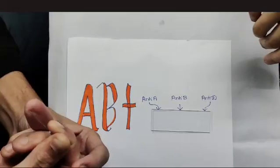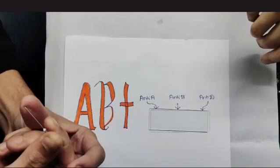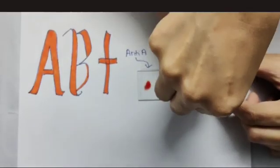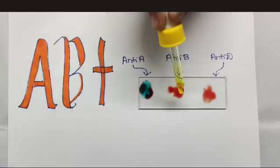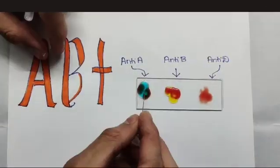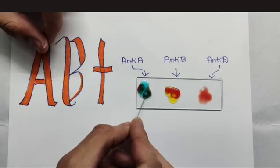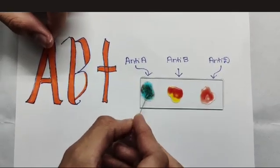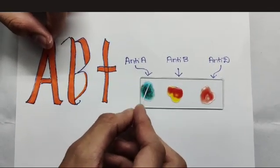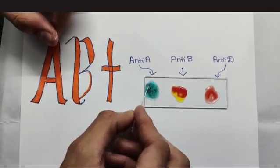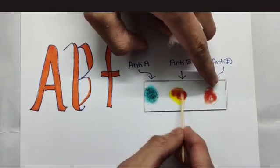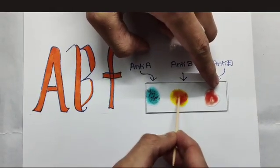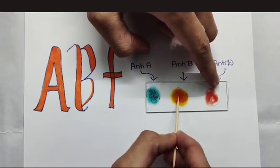For determining AB positive blood group, repeat the same procedure and observe. Here, clotting is seen in both anti-A and anti-B, which means both antigen A and antigen B are present. It is AB blood group.